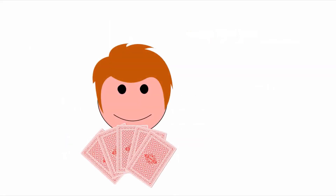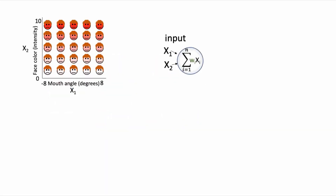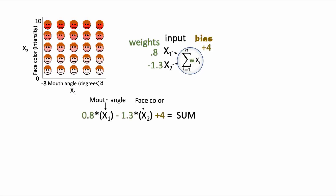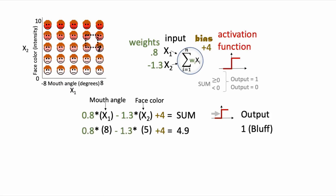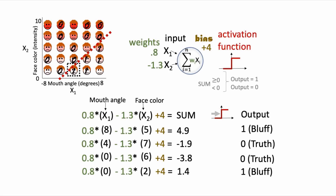We then went through another example of a single neuron model where the input had two dimensions. Here we were predicting whether another friend was bluffing at poker based on two-dimensional input consisting of mouth angle and face color intensity. We showed how the neuron could find values for two weights — one for mouth angle and the other for face color — plus a bias term, such that the weighted sum plus bias passed through an activation function could predict whether our friend was bluffing versus telling the truth.